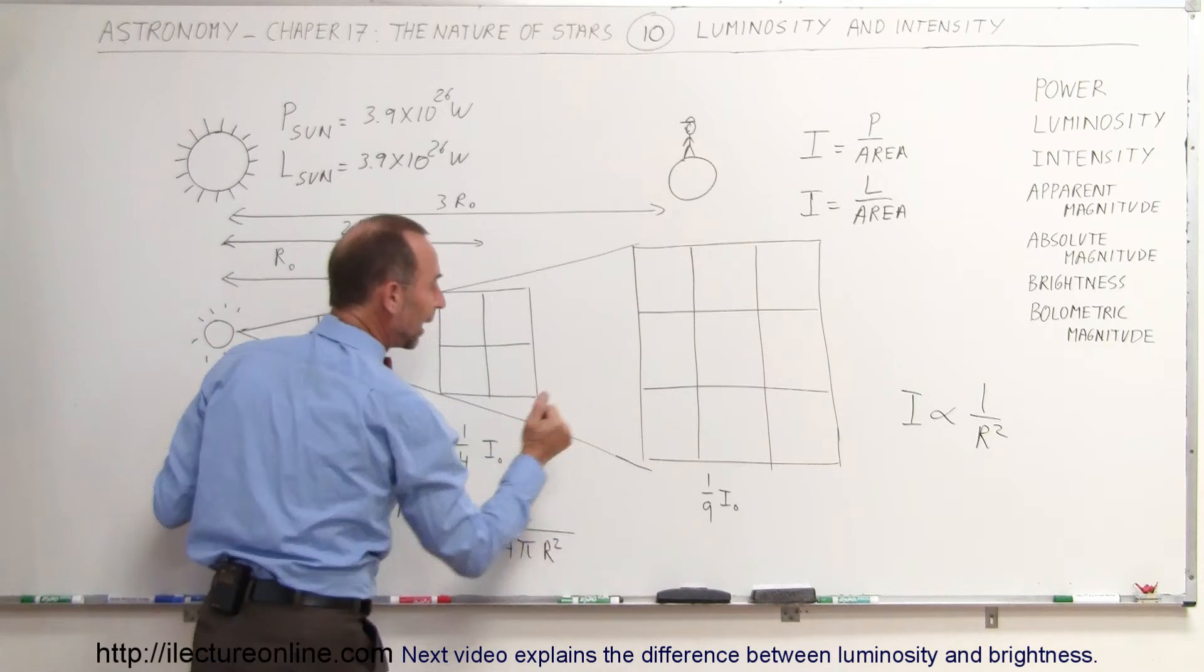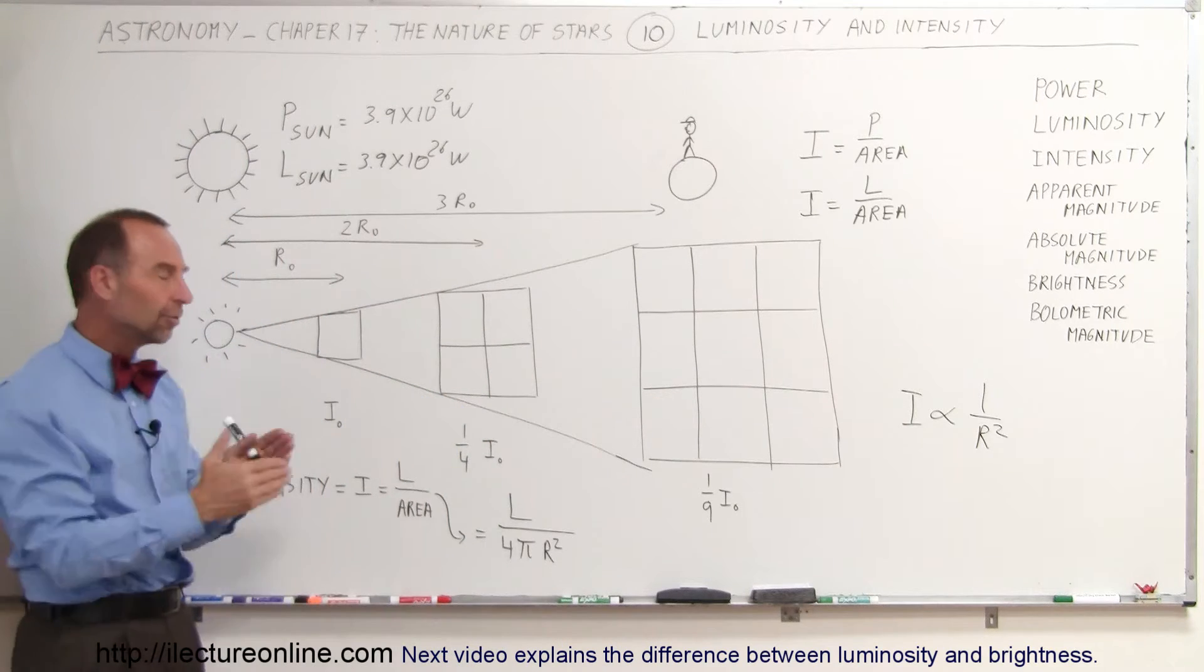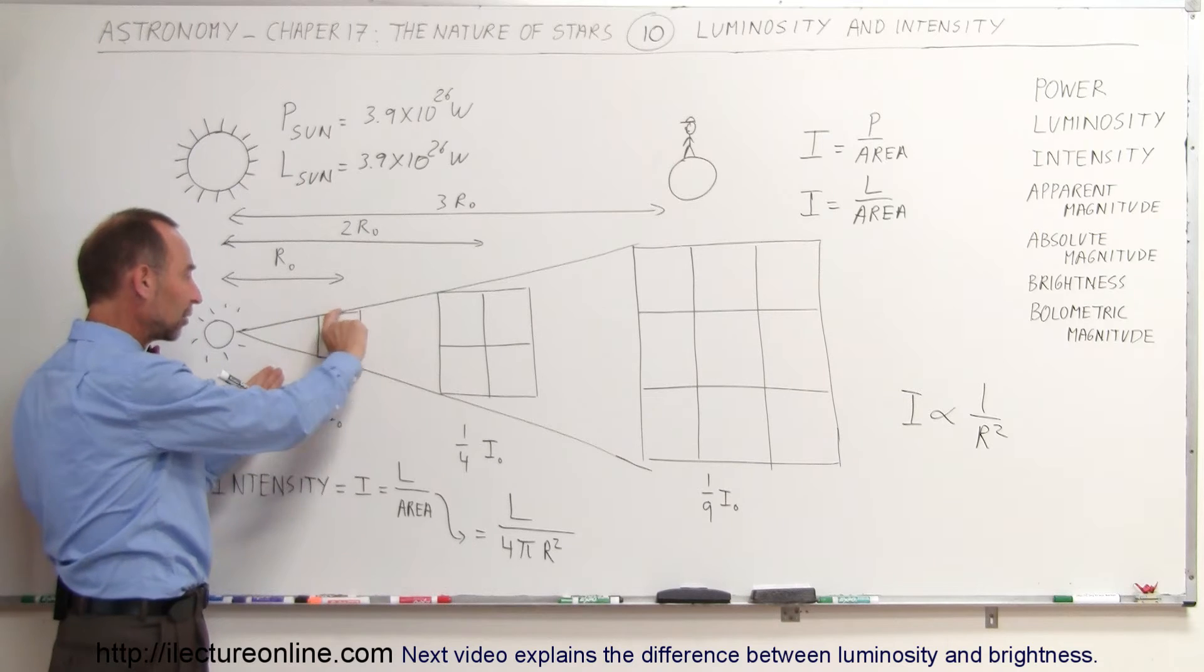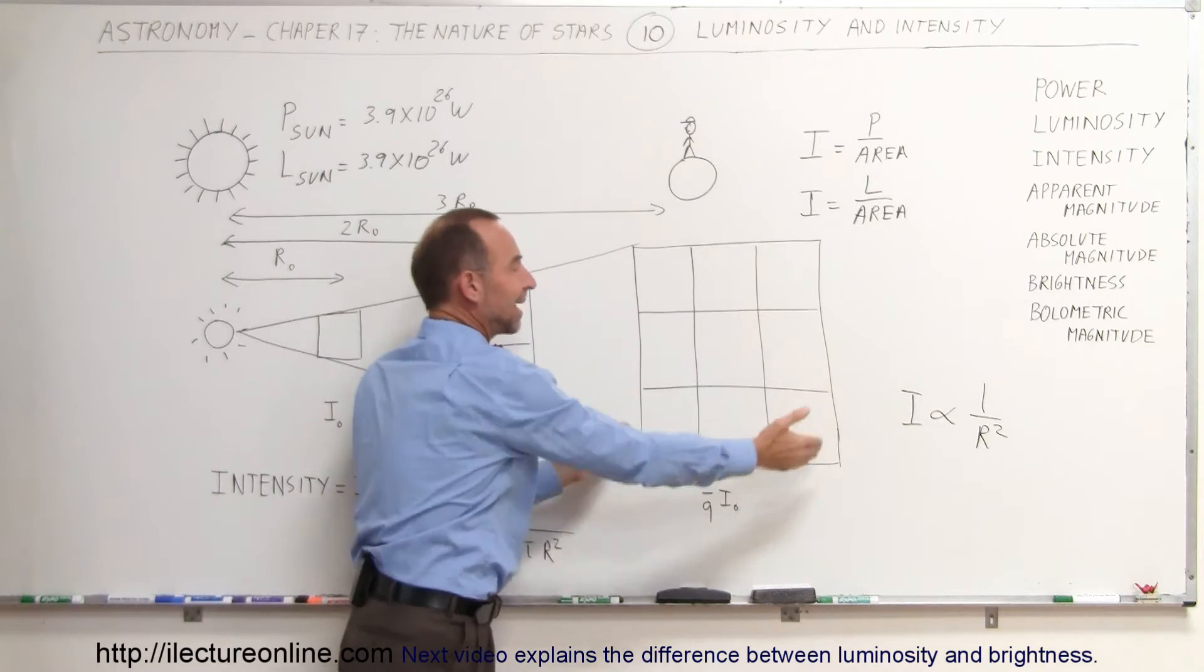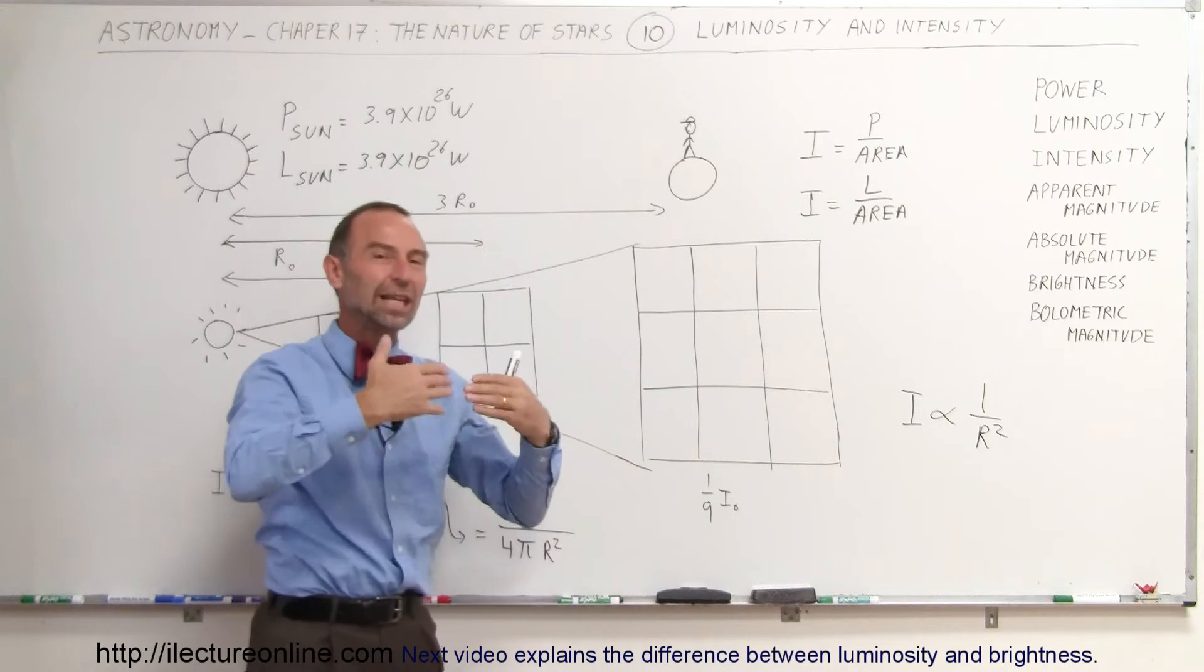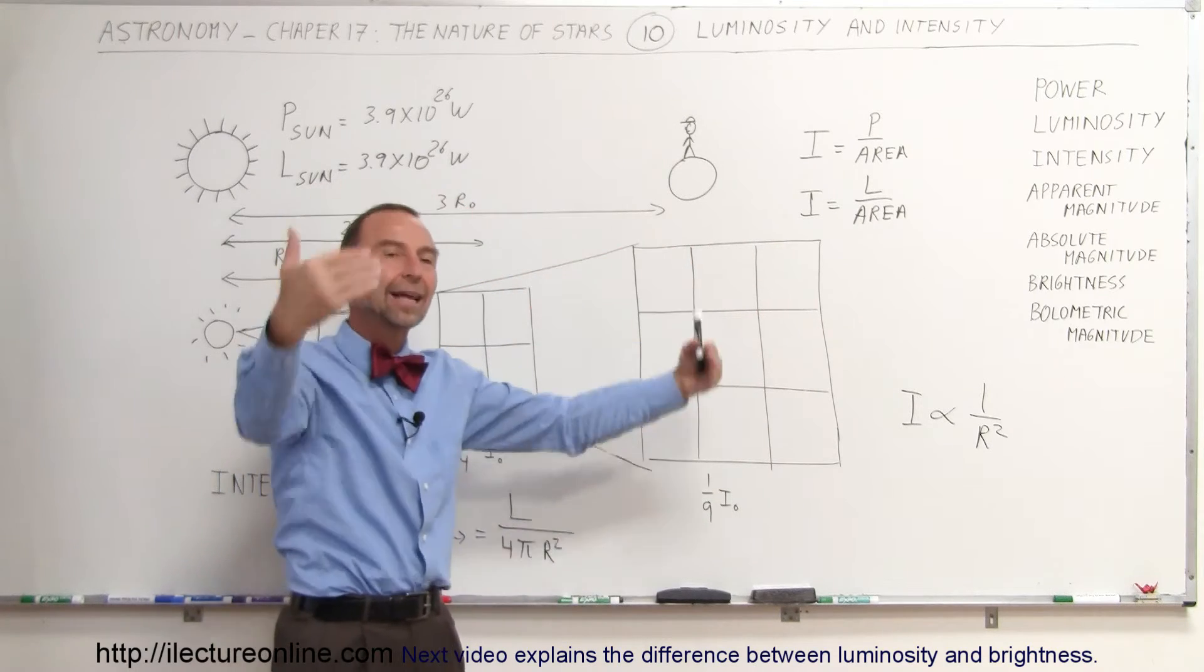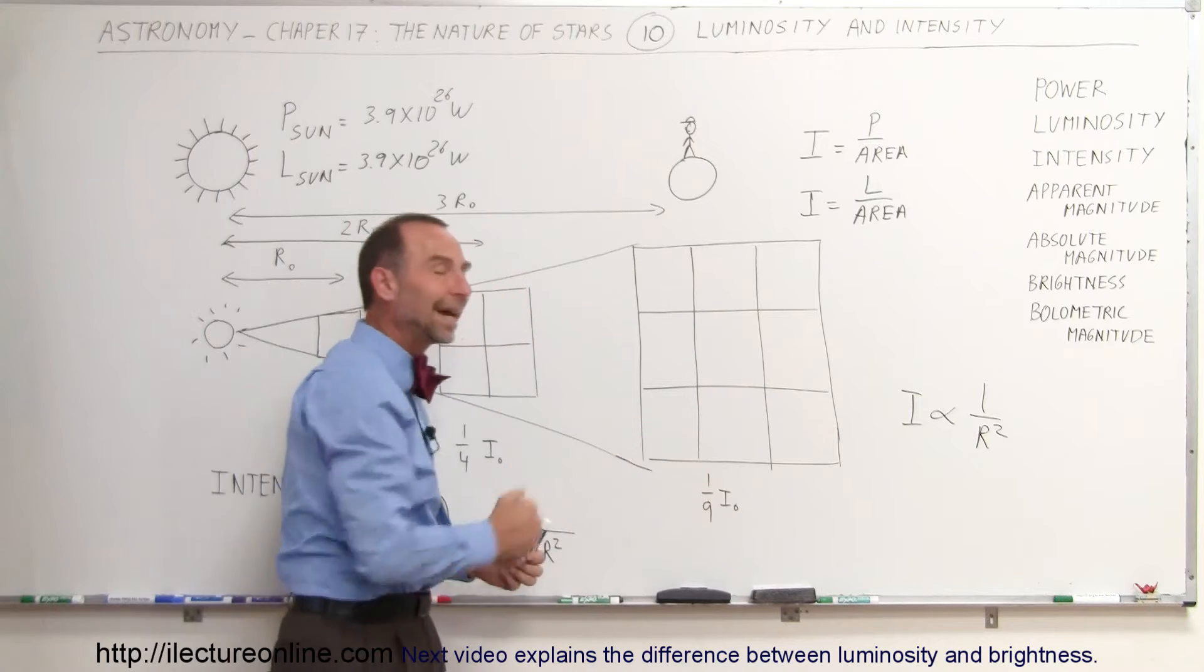If you're three times as far away, then you only get one-ninth of the original intensity because all the light that goes through this area right here now will go through a much bigger area that's nine times as much. So, the light or the energy is now spread out over nine times the area. So, you only get one-ninth of the intensity.